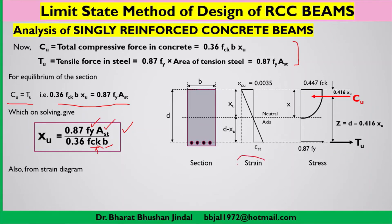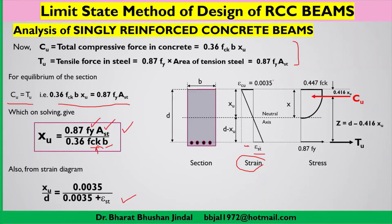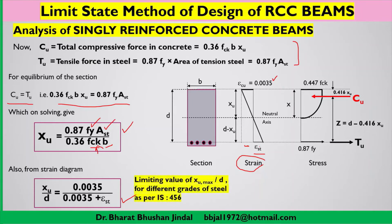From the strain diagram, using the similar triangles principle, we can also derive the ratio xu/d. Taking the full triangle, the base is 0.0035 plus epsilon_st, and the smaller triangle gives 0.0035. Applying similar triangle theory yields xu/d = 0.0035 / (0.0035 + epsilon_st). This gives the ratio of the depth of the neutral axis to the effective depth of the section.